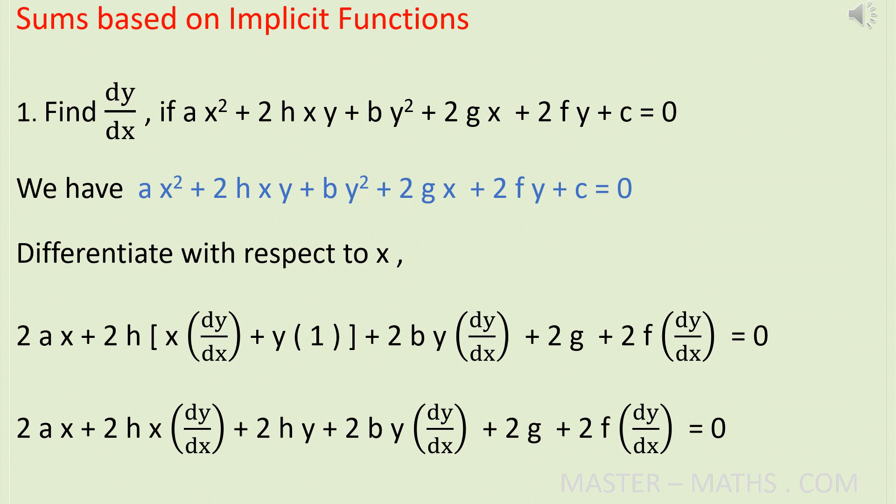You get 2ax. Second term: 2hxy. 2h is a constant, keep it as such. On differentiating xy, you involve the product rule: uv dash plus vu dash. Next term: by squared. B is a constant, keep it as such. On differentiating y squared, you get 2y into dy by dx, because you are differentiating with respect to x. Next term: on differentiating 2gx, you get 2g.